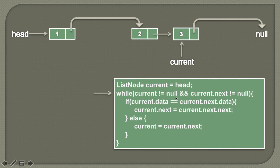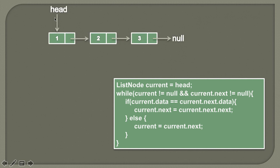The while loop condition is evaluated once more. Current is not null, but current.next is null, so the while loop condition comes out to be false — it makes sense because we have no more nodes to traverse. The while loop breaks. We have removed the duplicates from the sorted linked list: head points to 1, 1 points to 2, 2 points to 3, and 3 points to null. This was the demo of the algorithm.